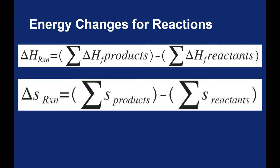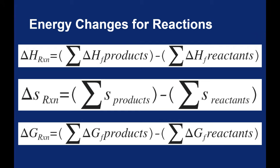You can use a similar formula for finding the change in free energy for a reaction. You can use the sum of the free energies of formations of the products, that's that ΔG_f, minus the sum of the change in free energy of the reactants.